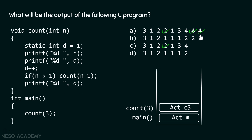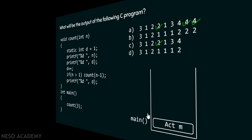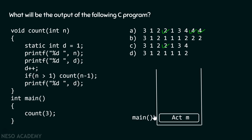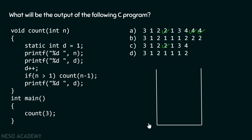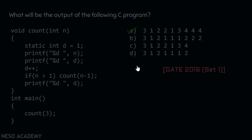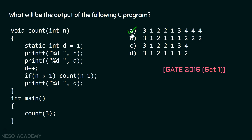After printing d=4 in count(3), there is no statement remaining. The activation record of count(3) is popped out of the stack, and we return back to the main function. After that, there is no statement in main, so its activation record is also popped. Therefore, the output of the program is 3 1 2 2 1 3 4 4 4, and option A is the correct answer.